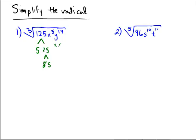X to the 5th is 1, 2, 3, 4, 5 x's, and y to the 17th is 1, 2, 3, 4, 5, 6, 7, 8, 9, 10, 11, 12, 13, 14, 15, 16, 17 y's.